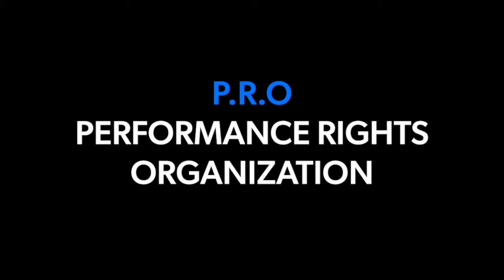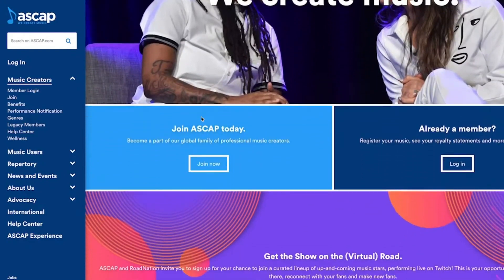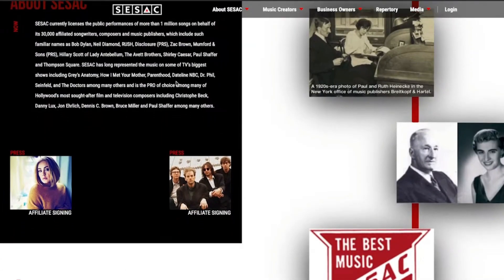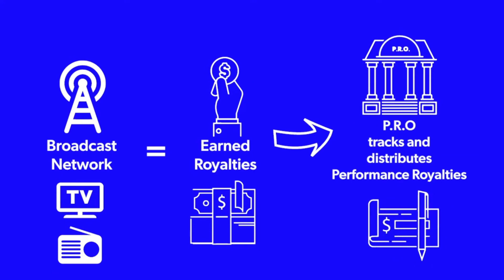Step two, and it's almost a prerequisite, is to join a PRO — a performance rights organization. These can include ASCAP, SESAC, and BMI here in the United States. When your song is played over a broadcast network such as TV or radio, those songs earn royalties and you get paid through your PRO. Joining a PRO is also important for tracking where your music is being used and for getting statements to understand your placements. If you don't join a PRO, you're going to be missing out on a lot of money from having your song placed on film and TV.